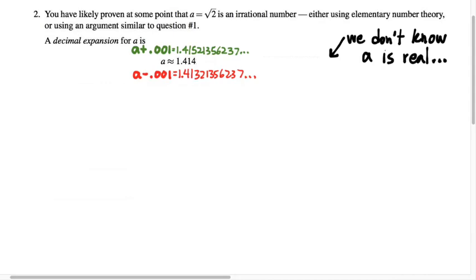And how do we know that 1.414 is, in fact, a rational number? Or what would it be as a ratio of two integers? 1414 over 1000. We could reduce that into lower terms if we wanted to, but we don't have to for now. So that's a rational number. It's definitely in between a plus and minus 0.001.